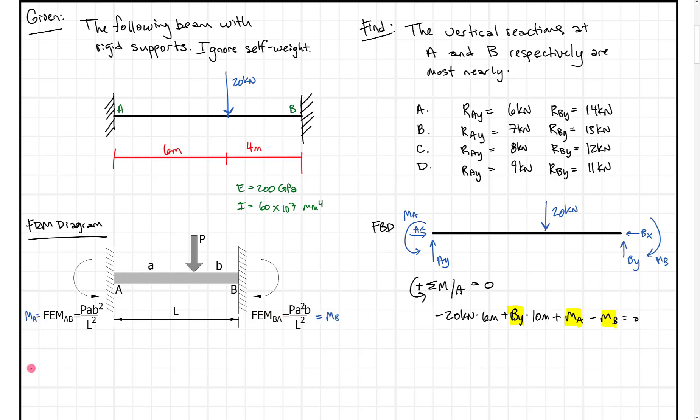The moment at A is P, which is 20 kilonewtons, times A, the distance from point A to the load which is 6 meters, times the 4 meters squared divided by 10 meters squared - the total length is A plus B. When we do that out, we get 19.2 kilonewton meters.